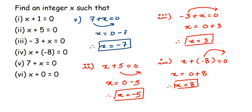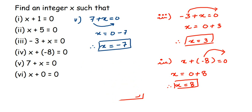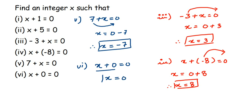The last question is x plus 0 is equal to 0. Since x plus 0 is just x, it becomes x is equal to 0. You don't need to transpose zero to the other side because x plus zero itself is x. Therefore, x is equal to 0. I hope this is clear — how to transpose a number and how the sign changes.